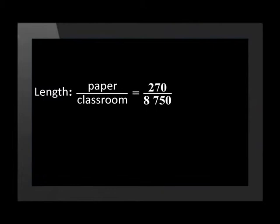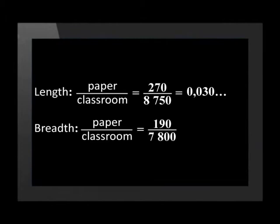To determine the first possible scale factor, we divide the length of the block by the length of the classroom and this equals 0.03. To determine the second possible scale factor, we divide the size of the width of the block by the width of the classroom and this equals 0.024.